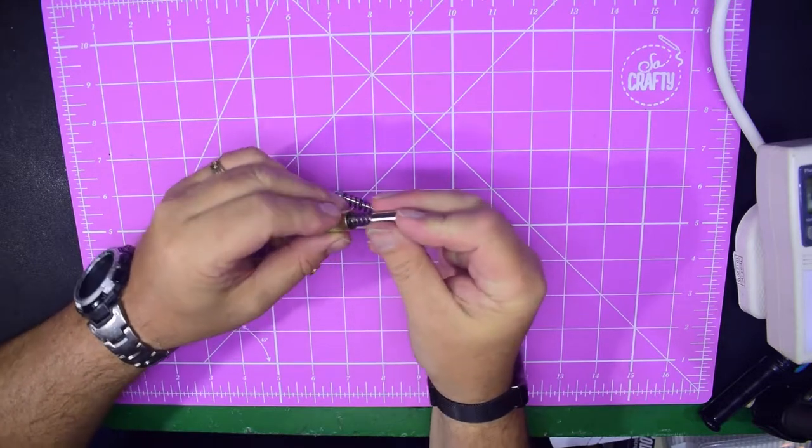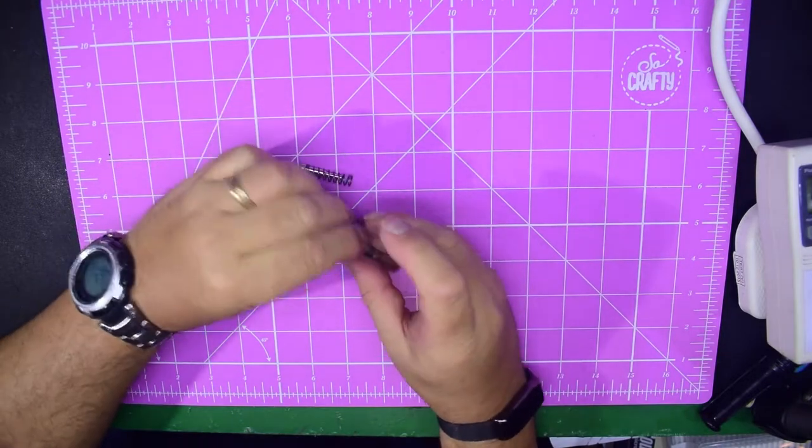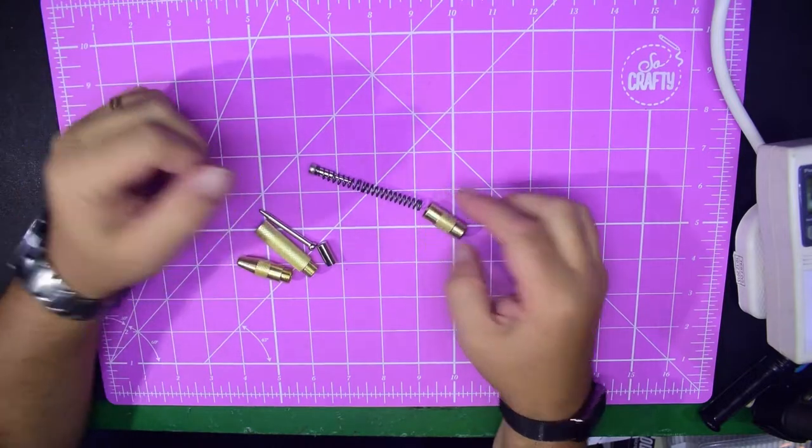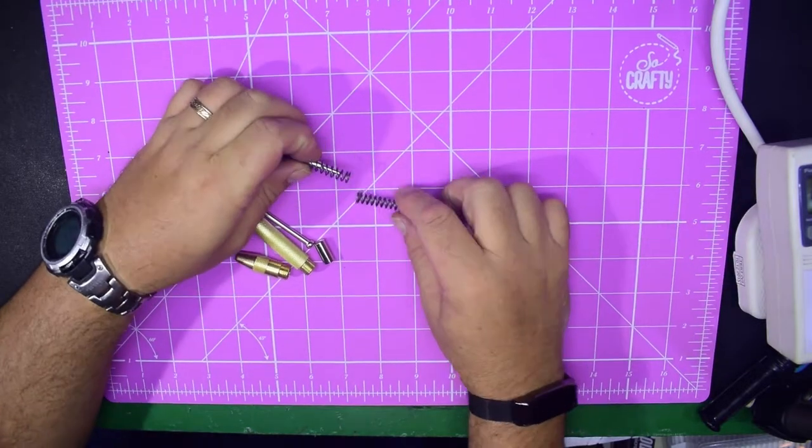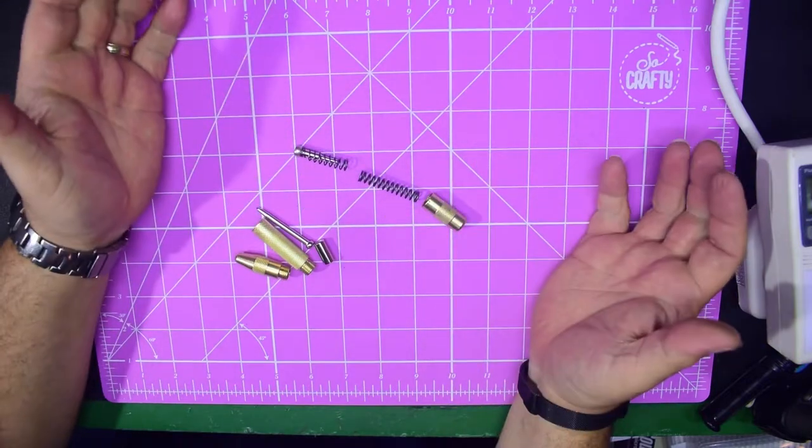So once it reaches enough pressure against this spring to overcome this spring, then it fires forward, which is fair enough. Sorry, the other way around. This spring overcomes this spring. It's great.